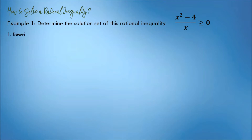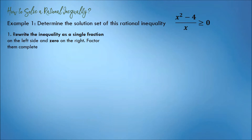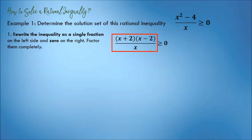Step number 1. Rewrite the inequality as a single fraction on the left side and 0 on the right. Factor the numerator and denominator completely. Single fraction in factored form on the left, and 0 on the right.